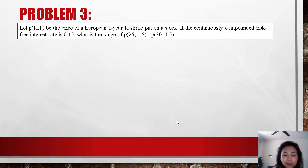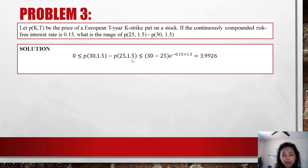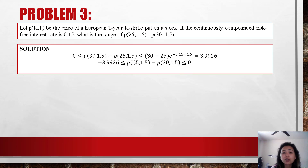For the question asking about the range, we apply the spread formula. We know P(30, 1.5) minus P(25, 1.5) should be non-negative since the higher the strike, the higher the put price. This difference should also be less than or equal to (30 − 25)·e^(−rT). With r = 0.15 and T = 1.5, the right-hand side is 3.9926. So P(30, 1.5) minus P(25, 1.5) is squeezed between 0 and 3.9926. Since the question asks for P(25, 1.5) minus P(30, 1.5), we flip the sign: −3.9926 ≤ P(25, 1.5) − P(30, 1.5) ≤ 0.